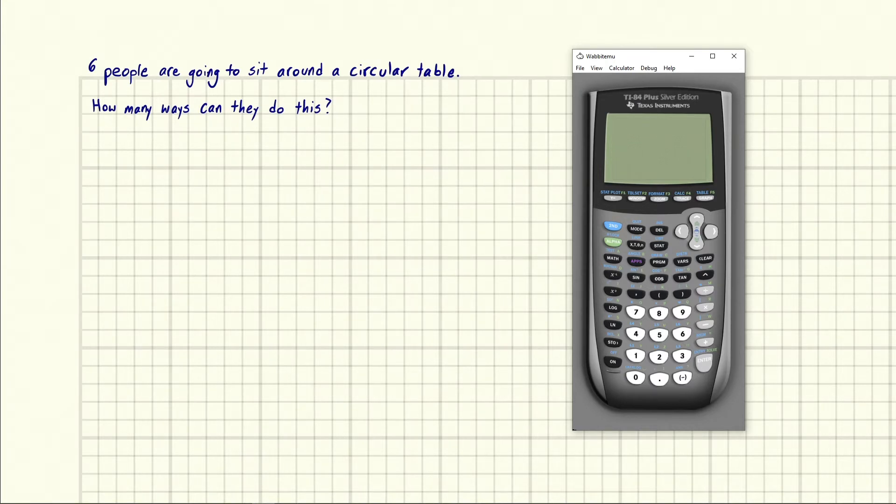So this problem is a little more confusing than it lets on at first, because you might be tempted to do this. You might say, okay, well, we're at a circular table. So maybe I'll put a spot for every seat. So one, two, three, four, five, six.